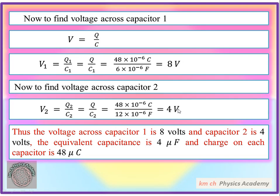Summary of results: The voltage across capacitor 1 is 8 volts and across capacitor 2 is 4 volts. The total charge stored on each capacitor is 48 microcoulombs. The equivalent capacitance of the combination is 4 microfarad. Thus all parts of the problem have been solved.